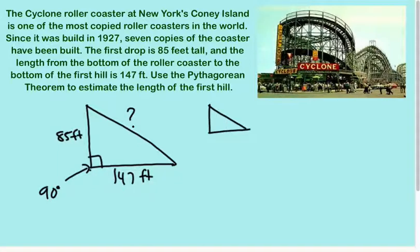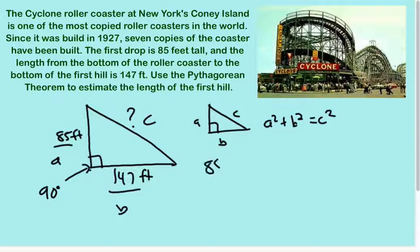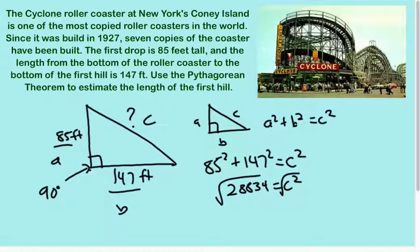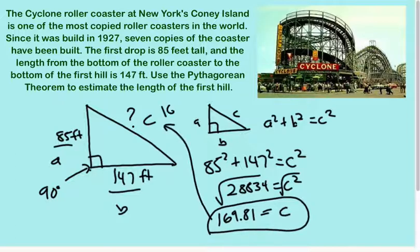It says in a right triangle, it says that A squared plus B squared equals C squared. You guys have seen this before, I guarantee it. So here's side A, here's side B, we're trying to figure out side C. So C squared equals 85 squared plus 147 squared. So I get C to be approximately 169.81. So this length is going to be 169.81 feet.